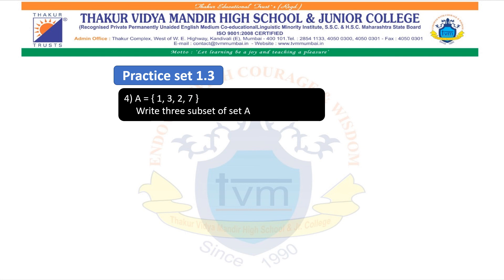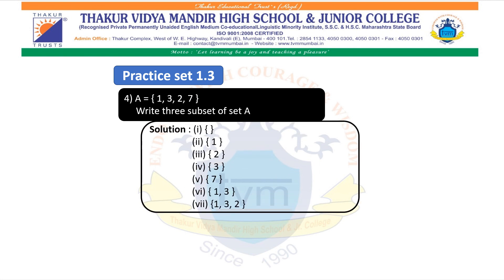Sum number 4: A is the set {1, 3, 2, 7}. Write 3 subsets of set A. A subset is a part of a set — we can take sets containing few elements, all elements, or even the null set as a subset of set A. Here we are listing 7 possible subsets of set A, and any 3 can be written as the answer.